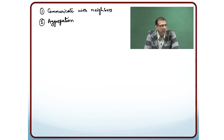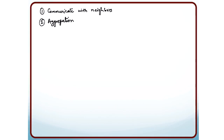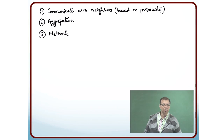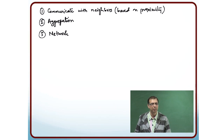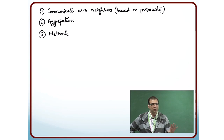How did you figure out who your neighbour is? Proximity. So what you essentially did is form a network. What was the shape of this network? How did you figure out what network to form? Well, it was a little bit at random.